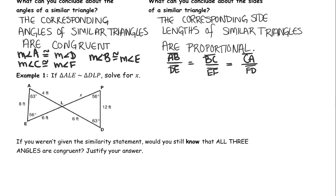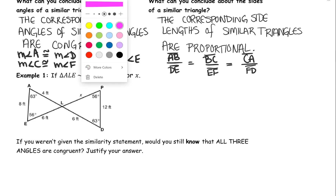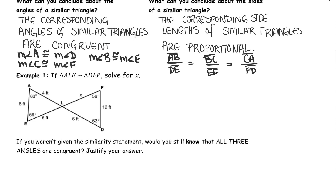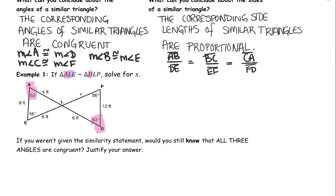Example 1. If triangle ALE is similar to triangle DLP, solve for side length X. First of all, I want to look at the similarity statement because it's going to tell me which angles and sides correspond to one another. Angle A corresponds to angle D. Angle L from the ALE triangle corresponds with angle L from the DLP triangle. And angle E corresponds with angle P. Now, determine which side lengths correspond to which sides.